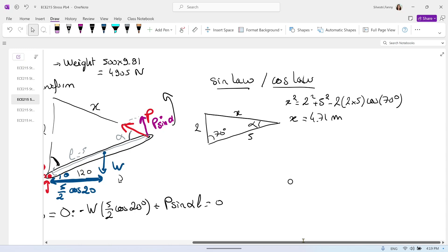So this is this one. And now I can do my sine law. Second step. Sine law. So that will give us sine 70 degrees divided by x equals sine alpha divided by 2. So you will find alpha equal the inverse sine of sine 70 times 2 divided by 4.71. So we got alpha equal 23.5 degrees.